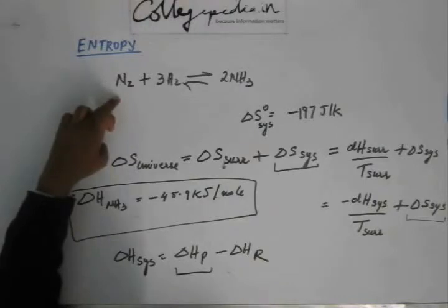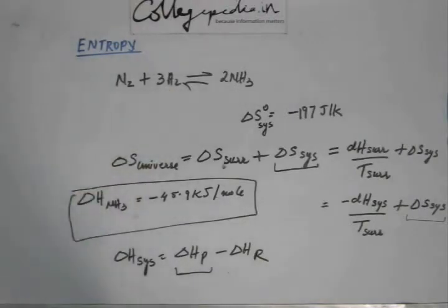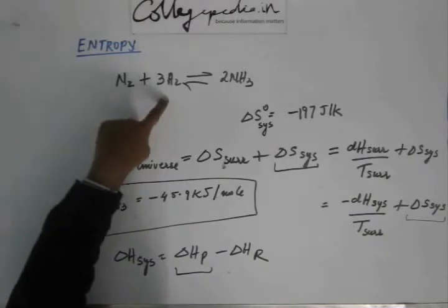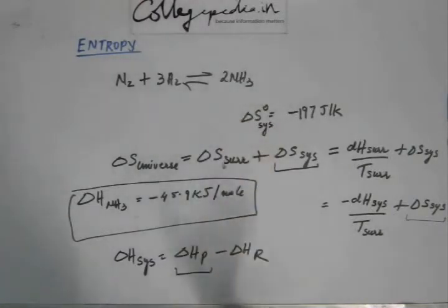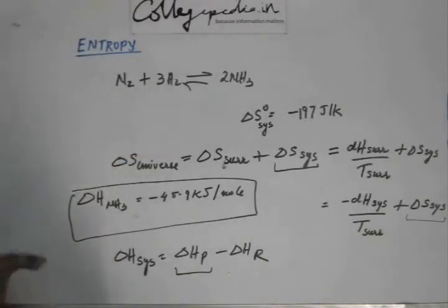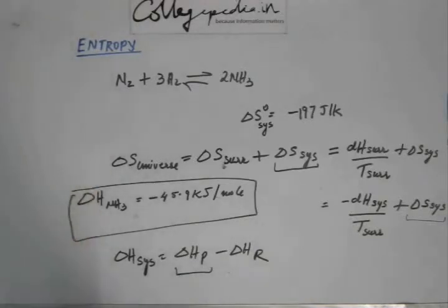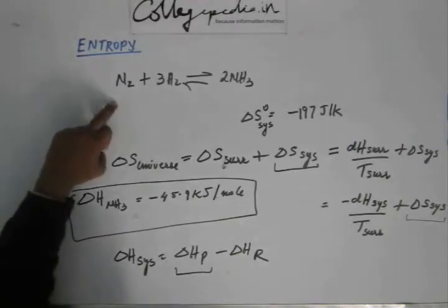Nitrogen in nature exists as N2 gas — that is its natural state. Hydrogen in nature exists as H2 gas — that is the natural state of hydrogen. Ammonia contains nitrogen and hydrogen, but ammonia itself is not the natural state of those atoms. So the delta H of formation for elements in their natural state is taken as zero. This is taken by convention — there is no purely logical basis for it, but for convenience we take it to be zero.